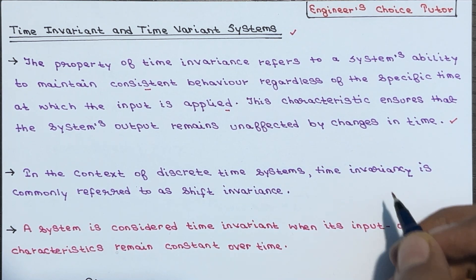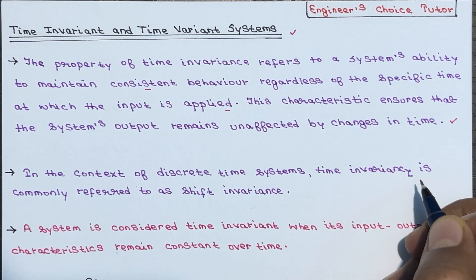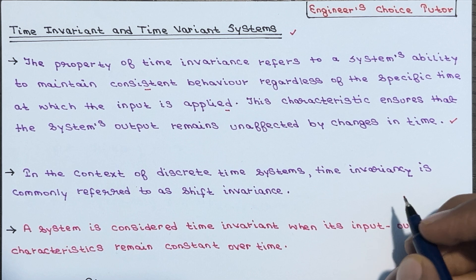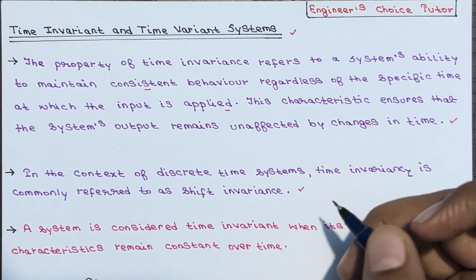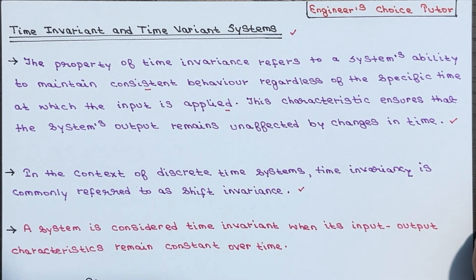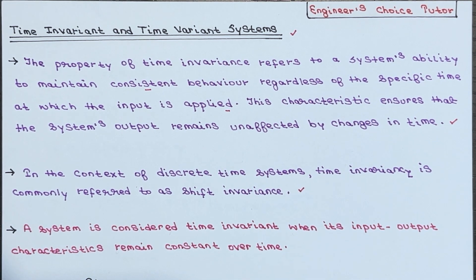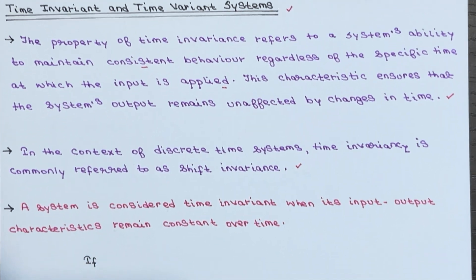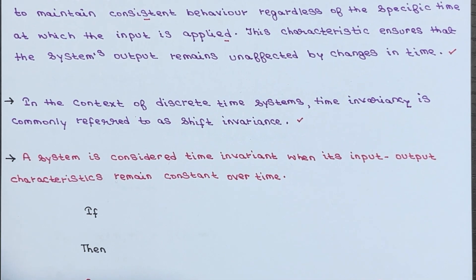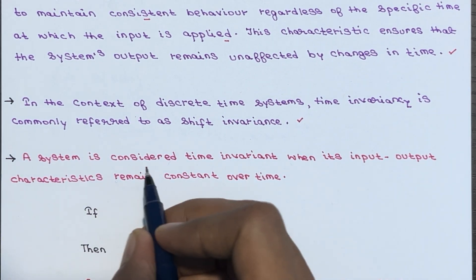In the context of discrete time systems, time invariance is commonly referred to as shift invariance. In some textbooks you will see time invariant and time variant systems, and in others you will see shift invariant and shift varying systems — both terms refer to the same concept.